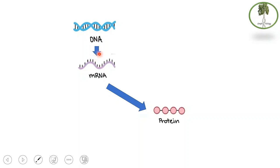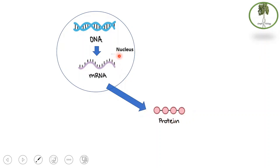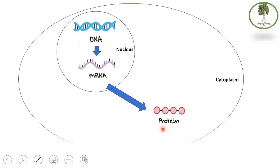Protein is made up of amino acids, while RNA and DNA are made up of nucleotides. The code in DNA is written as nucleotides, copied into mRNA (also nucleotides), then translated into an amino acid sequence which together makes a protein. The first process — copying DNA into mRNA — takes place in the nucleus, while the second process — translating the code into a protein — takes place in the cytoplasm.